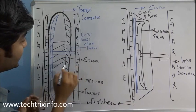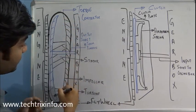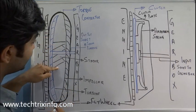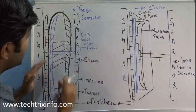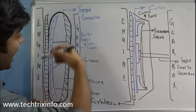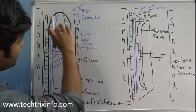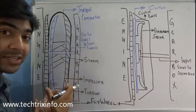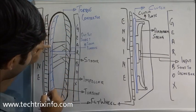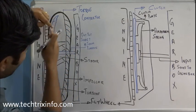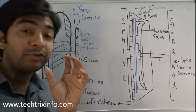In a torque converter there are three main components: the impeller, the turbine, and the stator. There is fluid inside the torque converter. As the engine rotates, the impeller works like a centrifugal pump and transmits flow towards the turbine. The turbine floats inside the torque converter and takes the drive towards the gearbox.